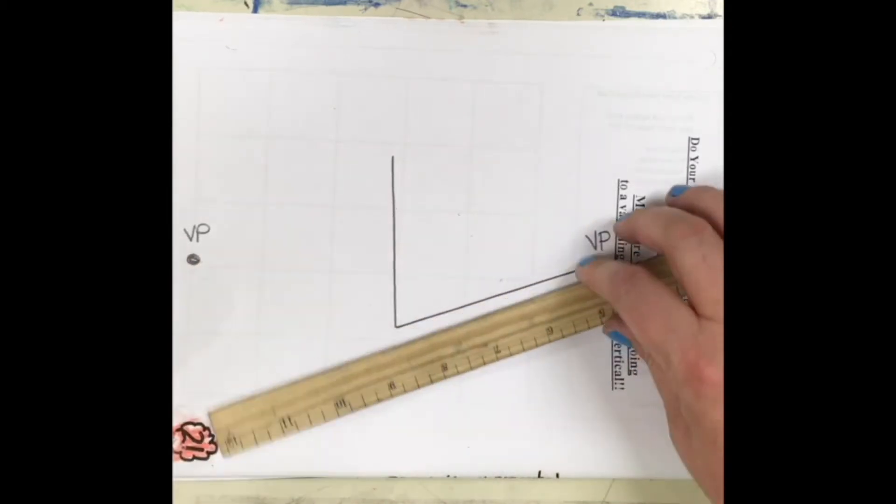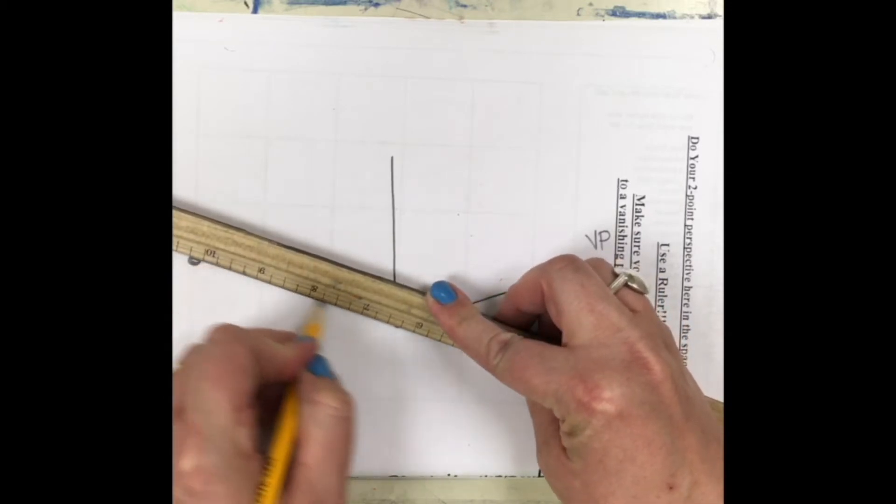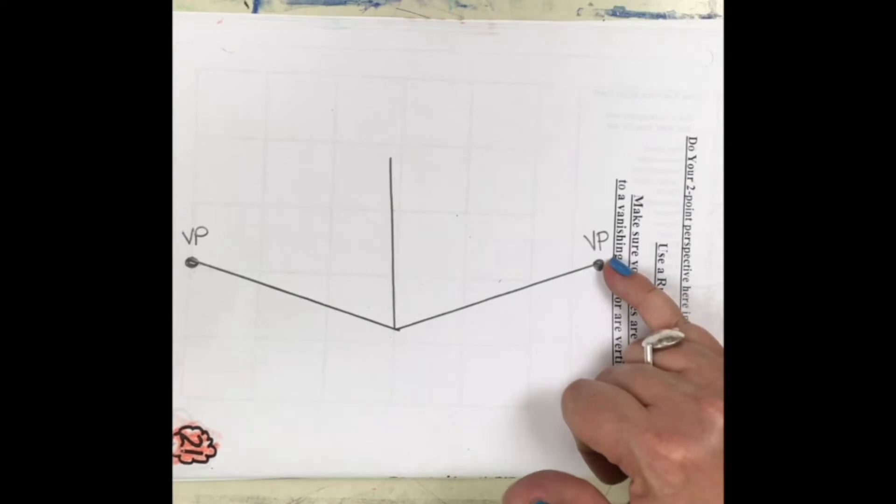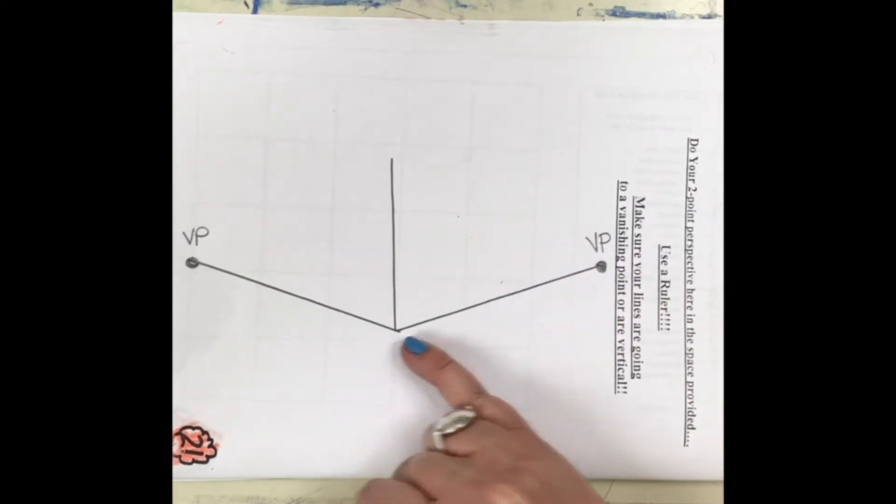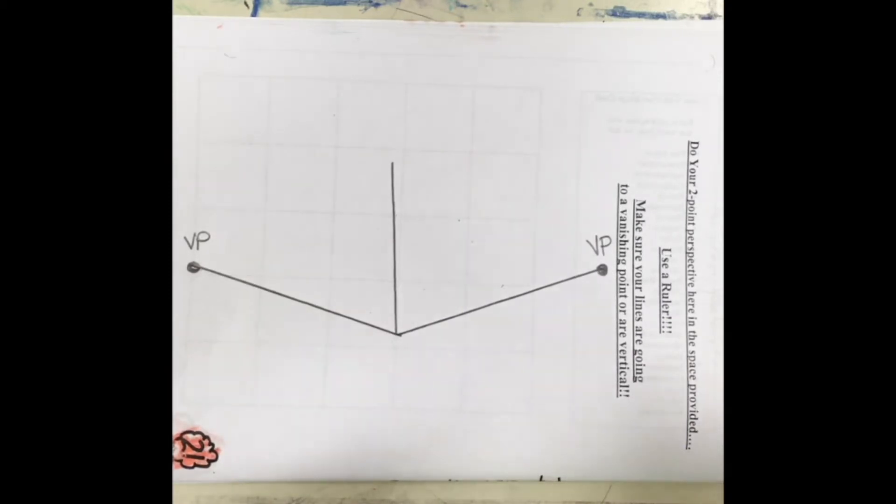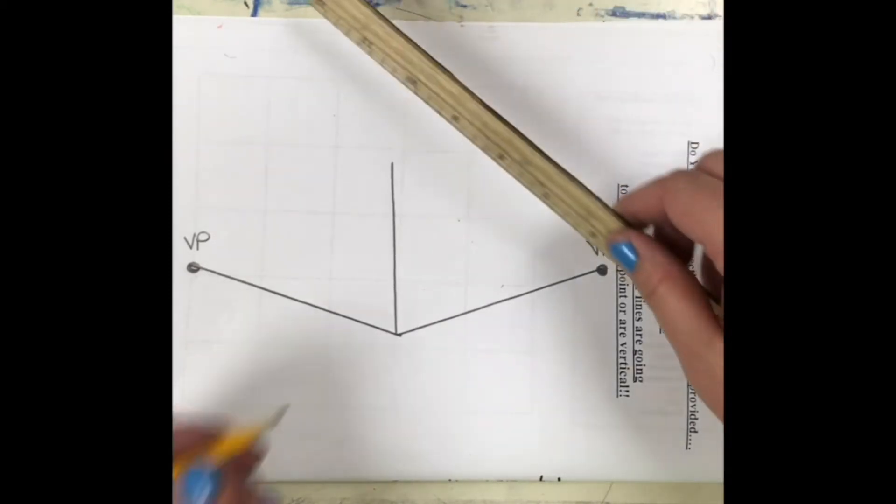Then you're going to draw a line back from the bottom of the vertical line to the vanishing point, bottom of the vertical line to the vanishing point. And I should see nothing in your hands, eyes are on the screen.